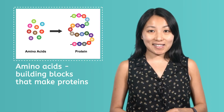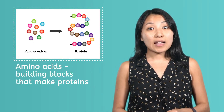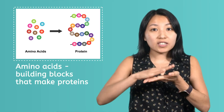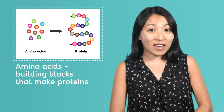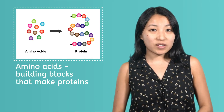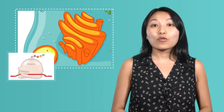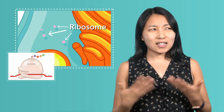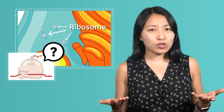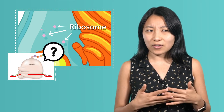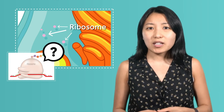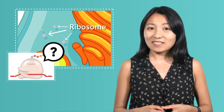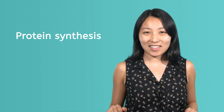Proteins are made out of building blocks called amino acids. These amino acids have to be put together and folded in just the right way to make different kinds of proteins. If you'll recall from our lesson on cell structure, ribosomes are where proteins are made in the cell. But how do ribosomes know which amino acids to put together in what order to make the proteins cells need? Enter protein synthesis.